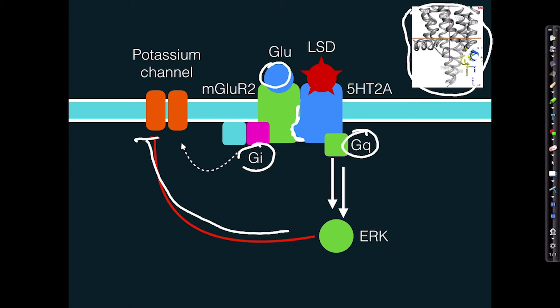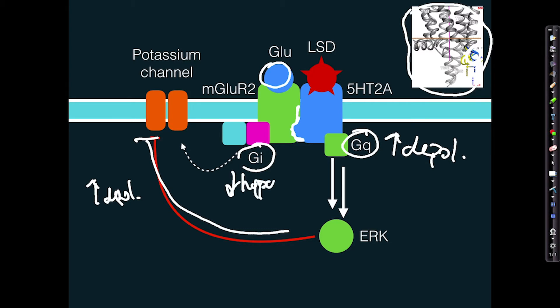And this leads to depolarization. Whereas GI activation, by activating potassium channels, leads to hyperpolarization.